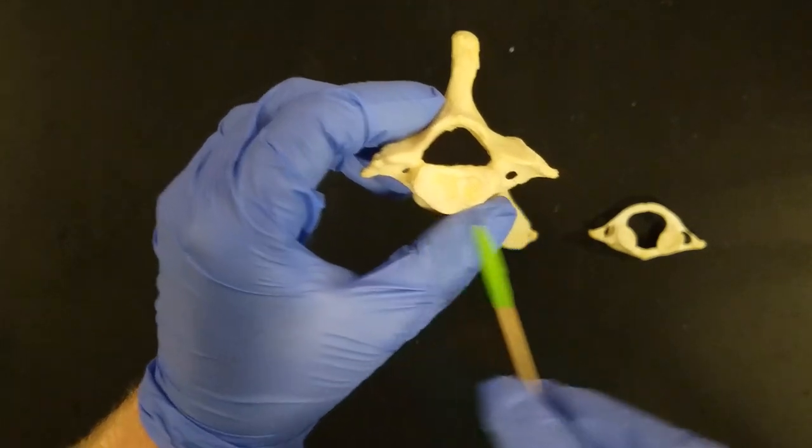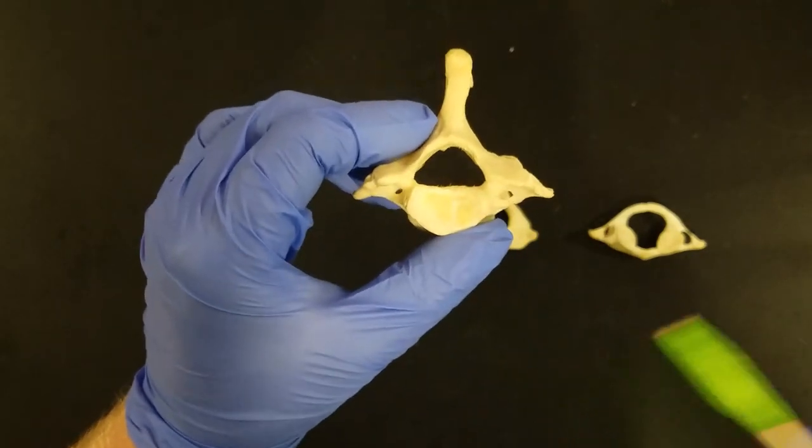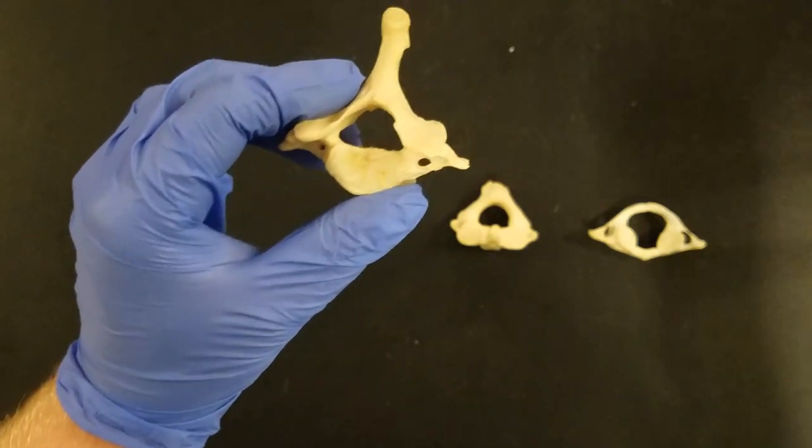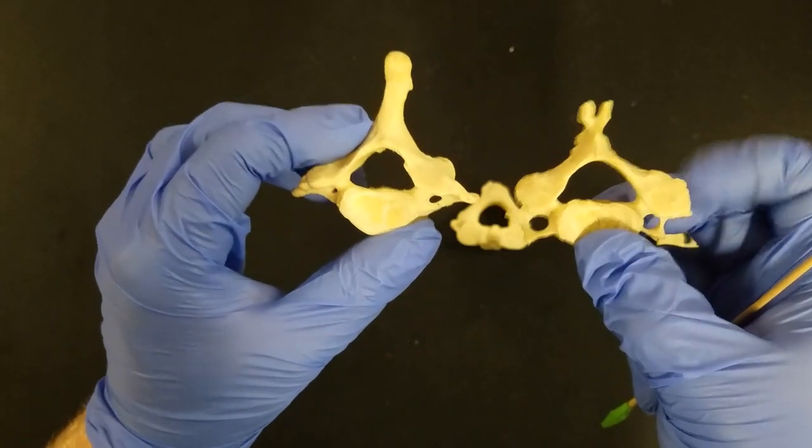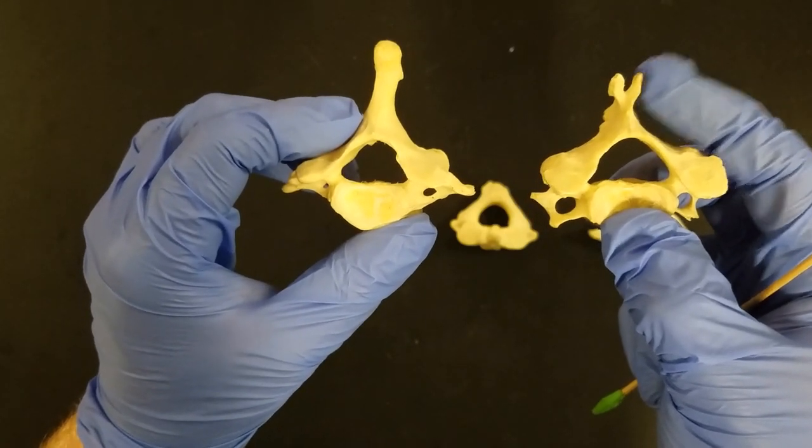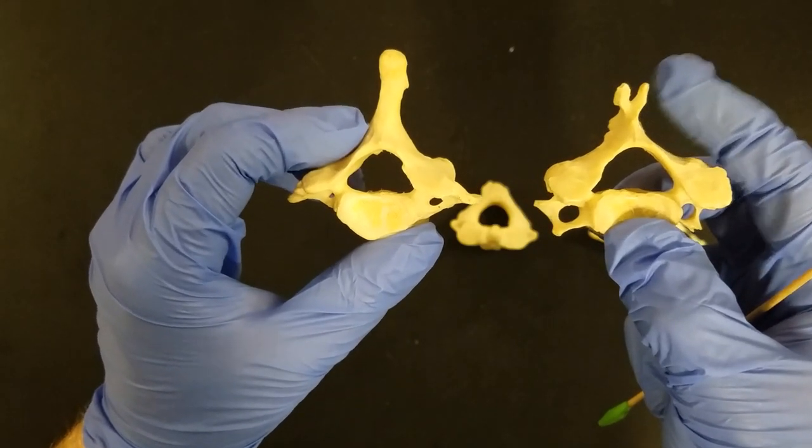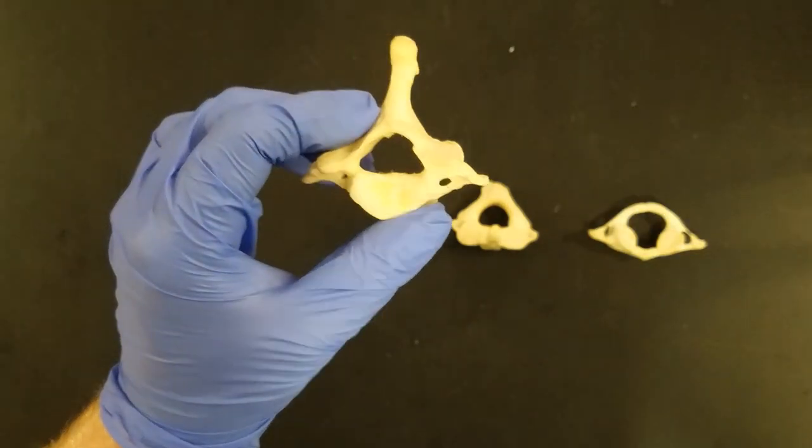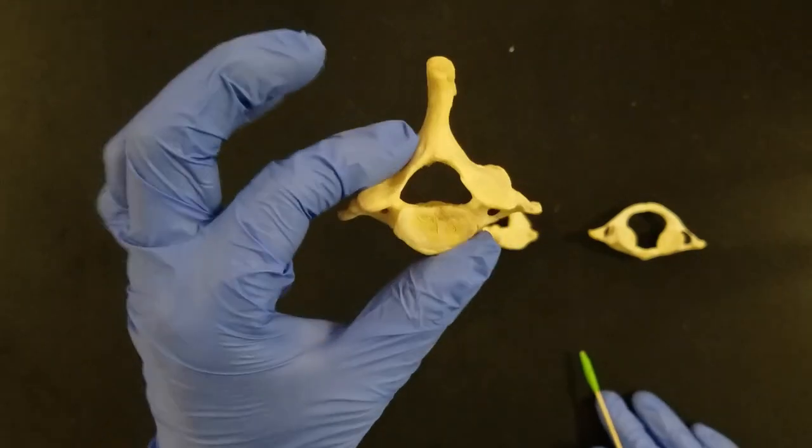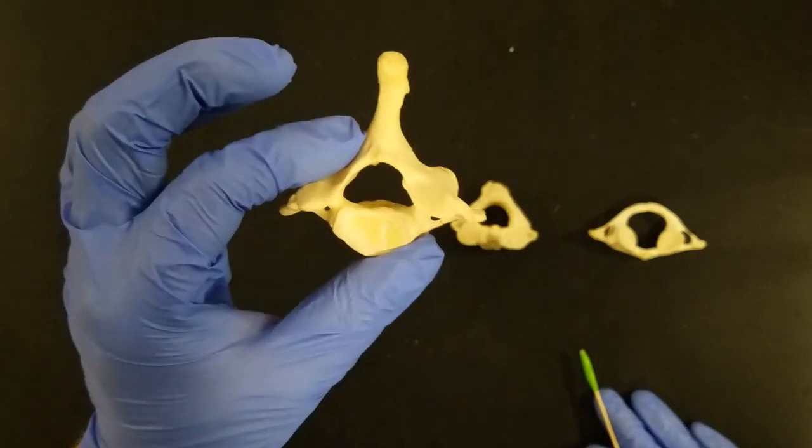Now C7, we can still see the three holes. Now the thing that's different about C7, if I compare it to a C3 through C6, look at the spinous process. On a typical cervical vertebrae, I have a very short spiked spinous process. But on C7, the spinous process is incredibly long. This gives this vertebrae the name vertebral prominence.